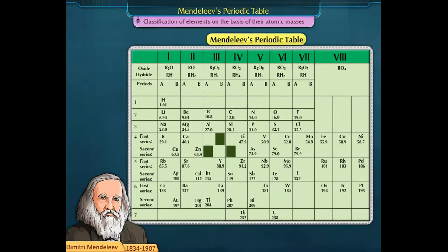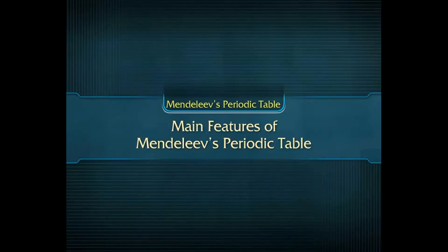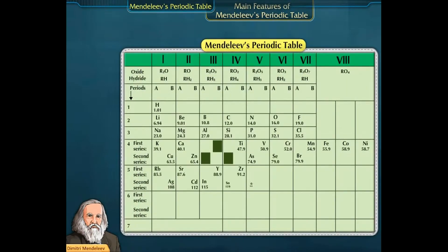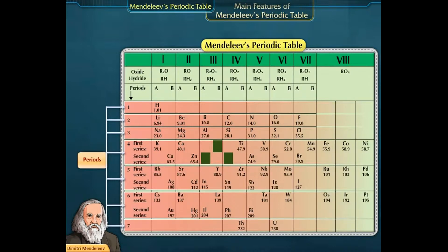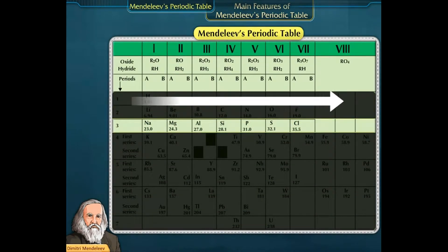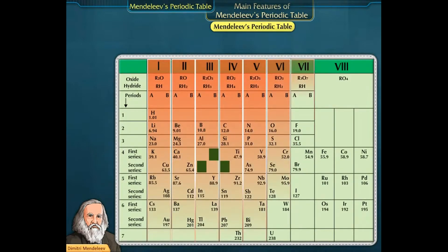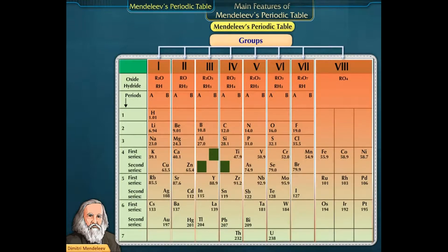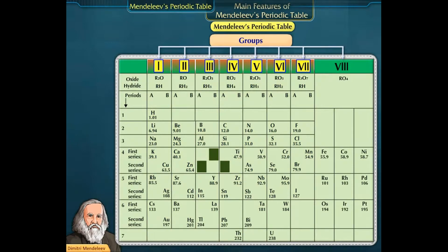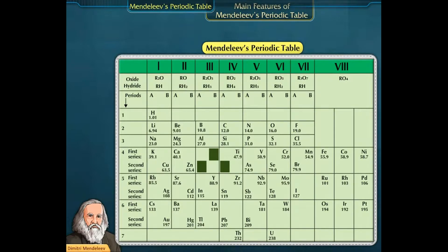This arrangement is called Mendeleev's Periodic Table. Its main features are: the horizontal rows are called periods, and there are 7 periods numbered from 1 to 7. As one moves from left to right in a period, there is a gradual change from metallic to non-metallic properties. There are 8 vertical columns called groups, numbered from 1 to 8. Groups 1 to 7 are further divided into 2 subgroups, A and B.